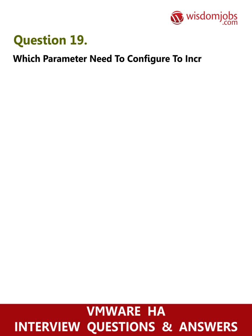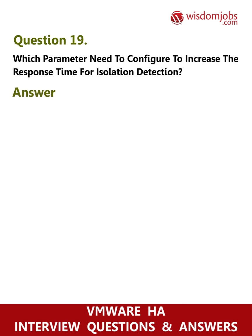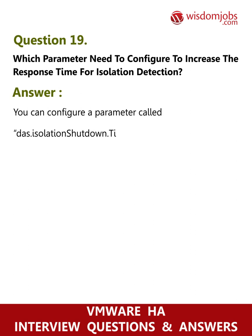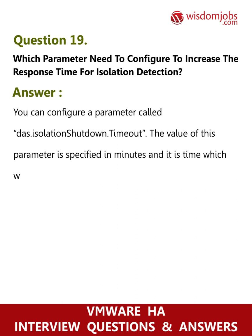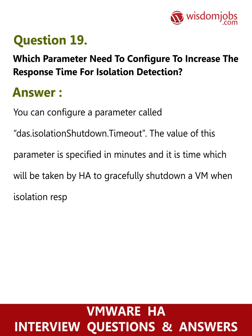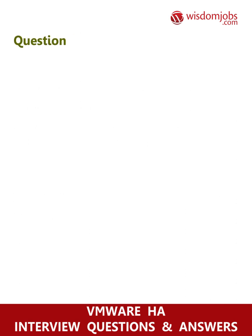Question 19: Which parameter needs to be configured to increase the response time for isolation detection? Answer: You can configure a parameter called das.isolationDownTimeout. The value of this parameter is specified in minutes and it is the time taken by HA to gracefully shut down a VM when isolation response is set to shut down the VM and it is triggered.